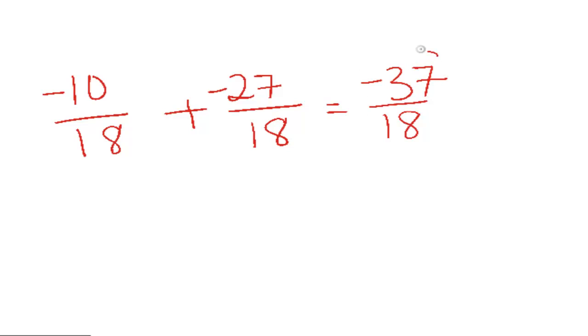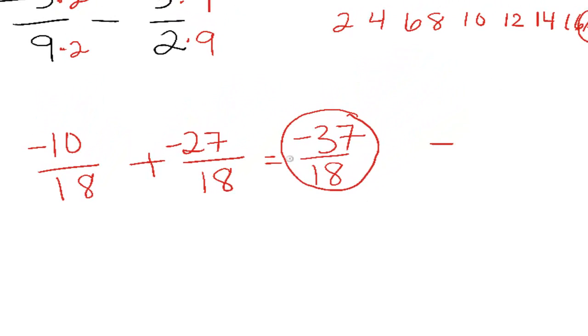And that is your answer. If you need to change this one into a mixed number, the fraction is negative. So we'll start off by putting the negative out front. Now 18 goes into 37 actually 2 times, because 2 times 18 is 36, which gives you 1 left over out of the 18 that you started with. And your answer is negative 2 and 1 18th, or negative 37 over 18.